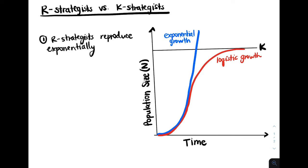Whereas K strategists reproduce near the carrying capacity. And that's actually where the name K strategists comes from. Since K indicates the carrying capacity and K strategists reproduce near the carrying capacity. So R strategists would reproduce when the population size is at this part of the curve, whereas K strategists reproduce near the carrying capacity.